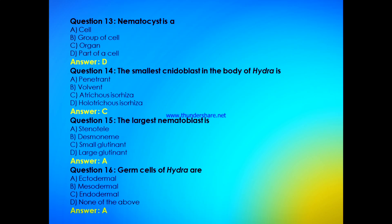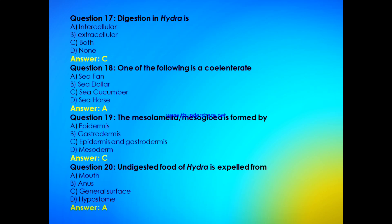Germ cells of Hydra are — ectodermal, mesodermal, endodermal, or none of the above? The answer is A — germ cells of Hydra are ectodermal. Next: digestion in Hydra is intracellular type, extracellular type, both types, or none of the above? The answer is C, that is both intracellular and extracellular types of digestion.